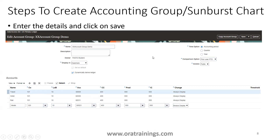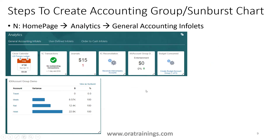That is the first step in creating an accounting group. Once the account group is created, an analytics infolet is automatically generated for it. Keep in mind that this may not be available instantly — it may take around 5 to 10 minutes, or sometimes you need to log out and log back in. Once created, wait five minutes, log in and out, then click on analytics and refresh the General Accounting analytics to see the infolet. You can maximize it and view it in tabular fashion, or click View as Sunburst from there.